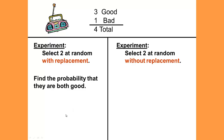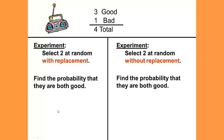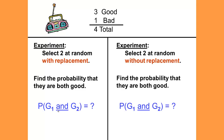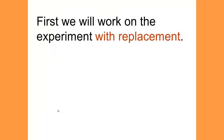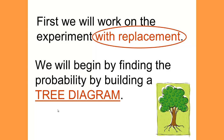Find the probability that they're both good. We're going to find the same probabilities and the notation would be the same — the probability that the first is good and the probability that the second is good. First we will work with the experiment with replacement, and we'll begin by using a tree diagram to help explain what's going on.